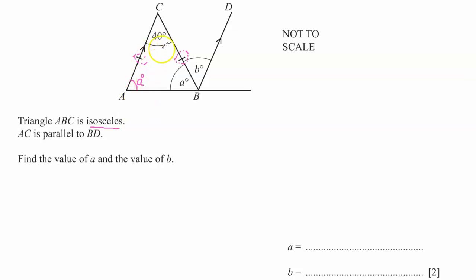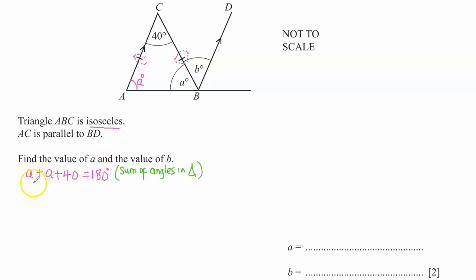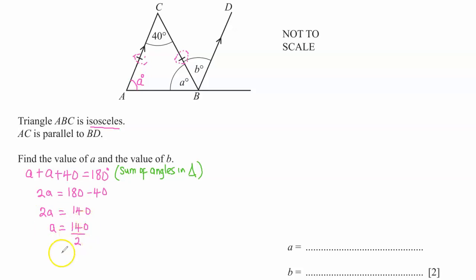From the sum of angles in a triangle, we can add up the three interior angles and equate to 180 degrees. So: a plus a plus 40 degrees equals 180. A plus A is 2A, so moving 40 degrees to the other side gives 2A equals 140. Dividing both sides by 2, A equals 140 over 2, so A equals 70 degrees.